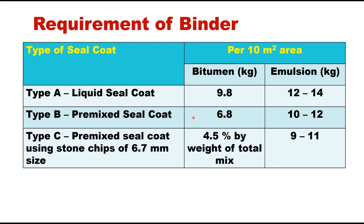Binder requirements for different types of seal coat: For Type A liquid seal coat, bitumen required is 9.8 kg per 10 m², or if emulsion is used, 12 to 14 kg per 10 m². For Type B premixed seal coat it is 6.8 kg (bitumen) or 10 to 12 kg (emulsion) per 10 m². For Type C premixed seal coat with 6.7 mm stone chips, premixing is done with 4.5% binder by weight of total mix, and emulsion quantity is 9 to 11 kg per 10 m².